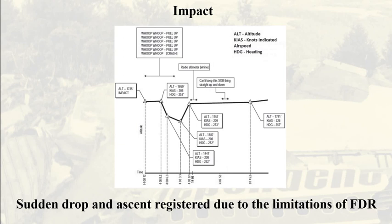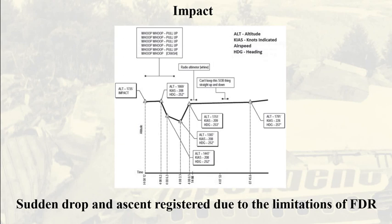Moment of impact. Note the sudden drop and descent shown prior to the impact as recorded on the flight data recorder — FDR. Investigators stated that the drop and climb recorded were not as sudden as they seemed, being recorded as such due to the characteristics of the earlier-type FDR used in the jet. This concludes this presentation. Links for more information are below in the video description. Keep in touch.